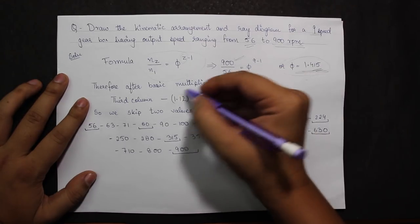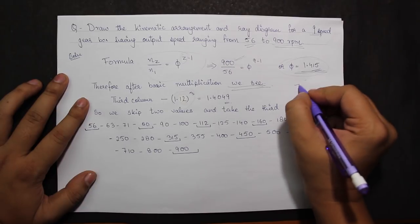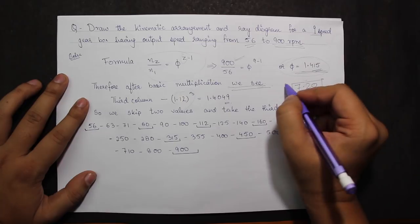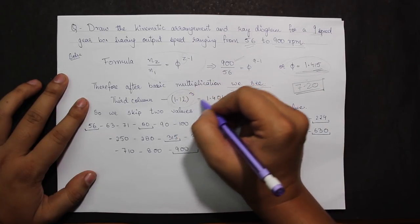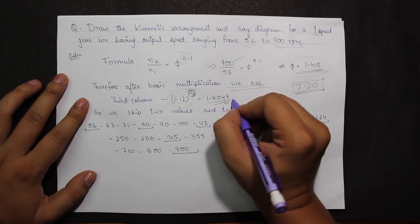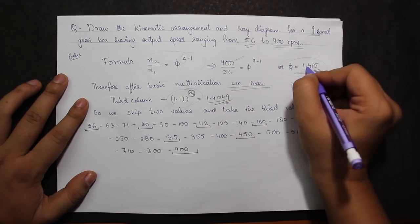I see in the third column that if I multiply φ equals 1.12 three times, I get the value as 1.40, which is quite close to the value of φ I'm getting from the formula.